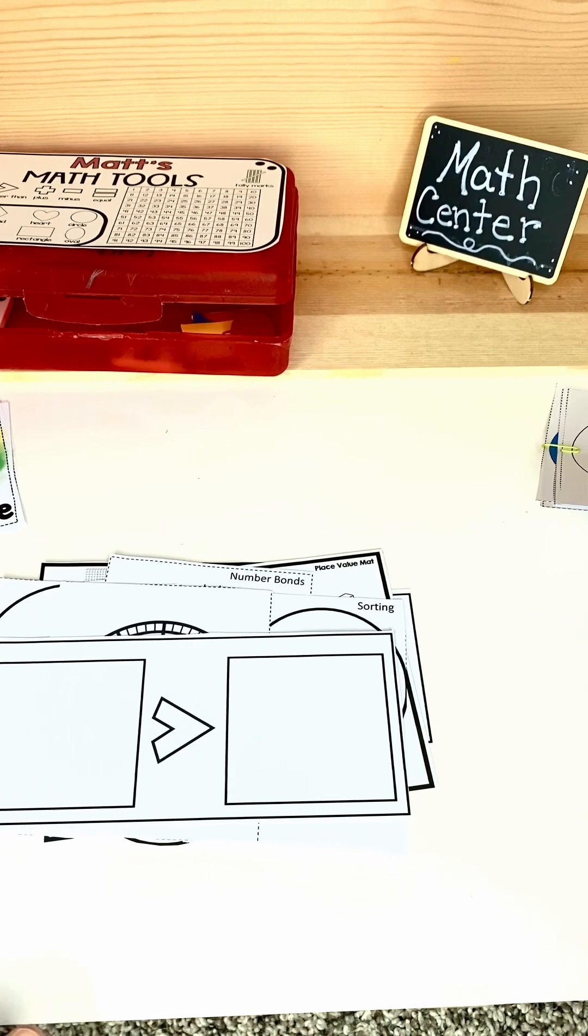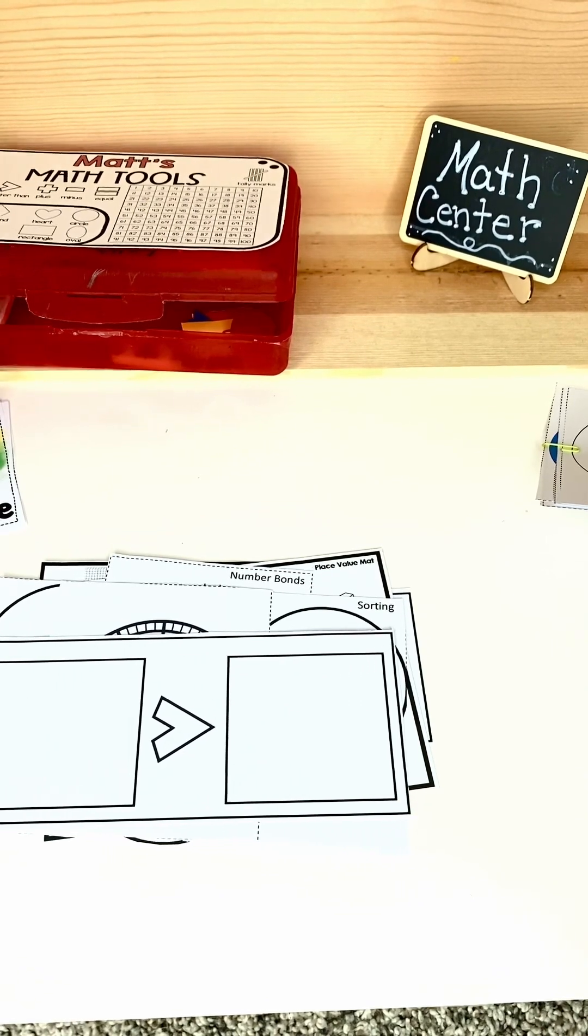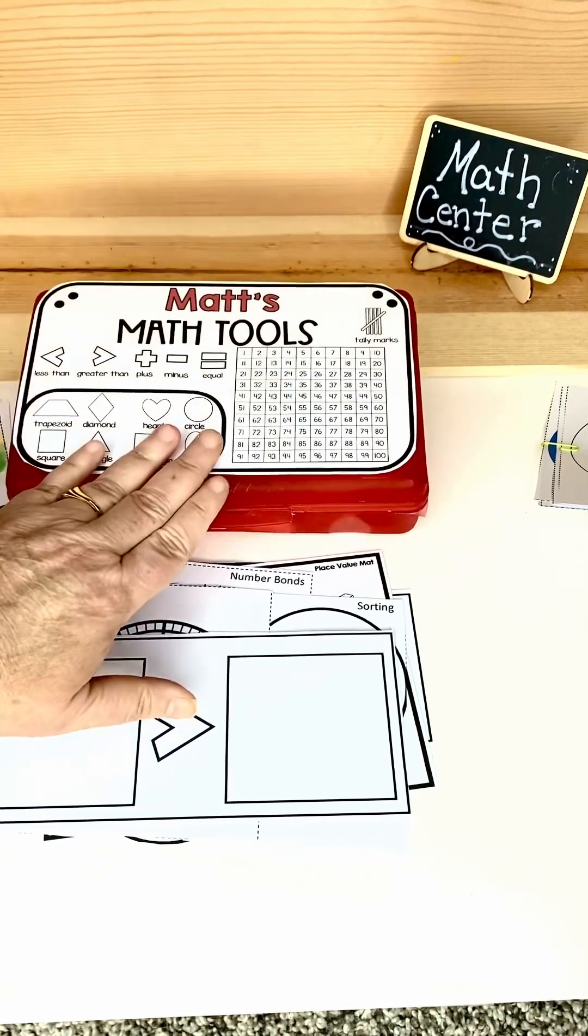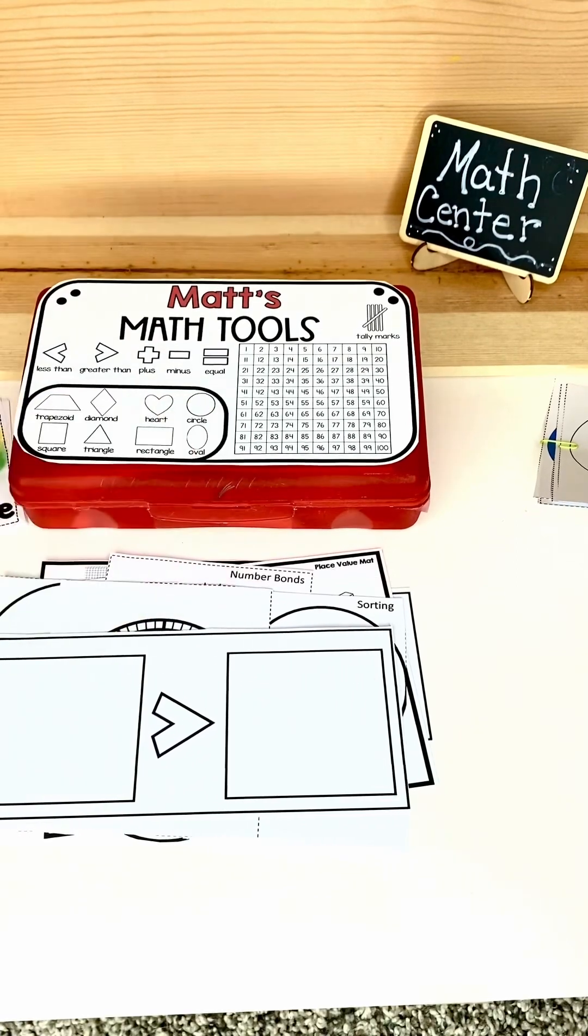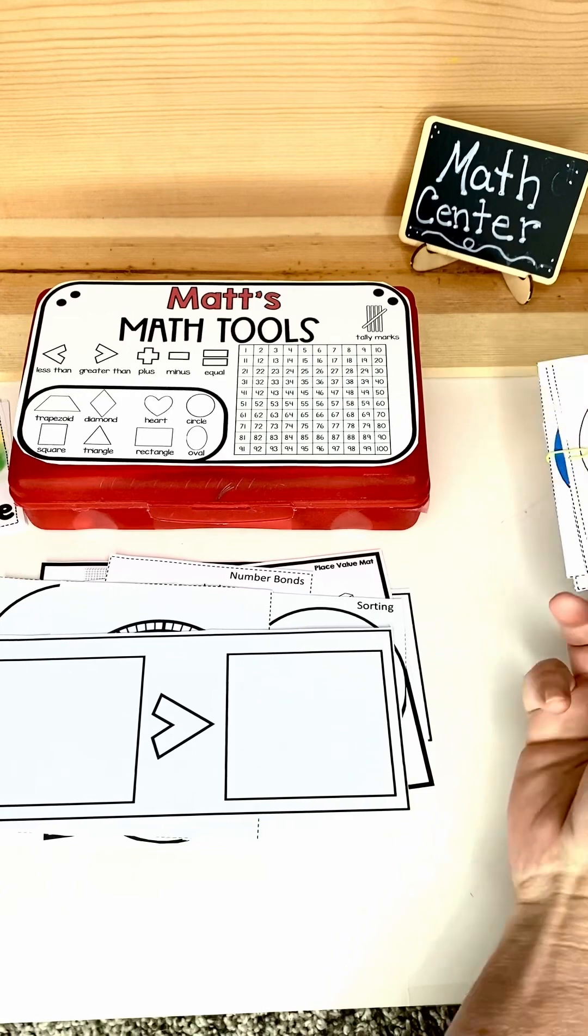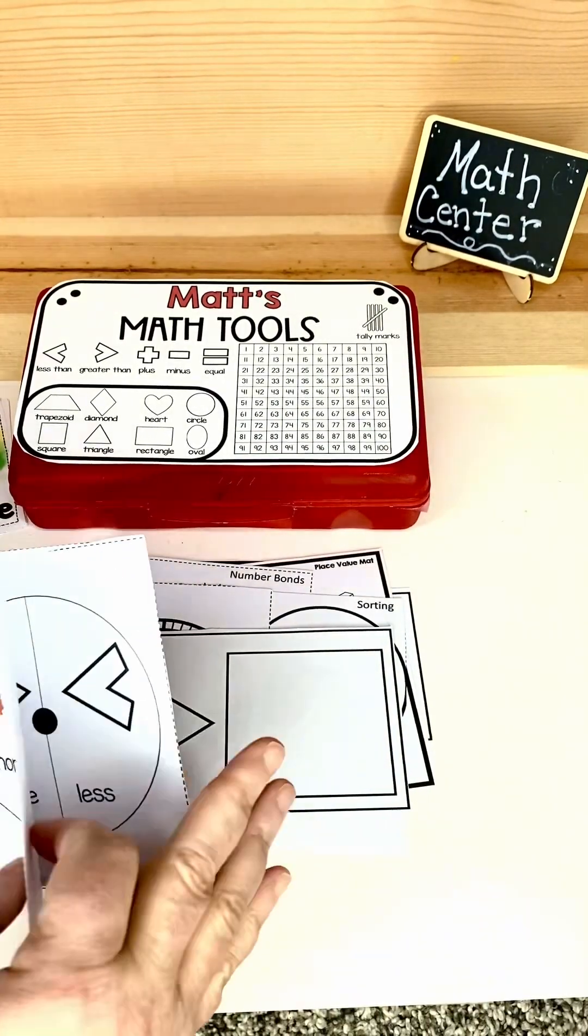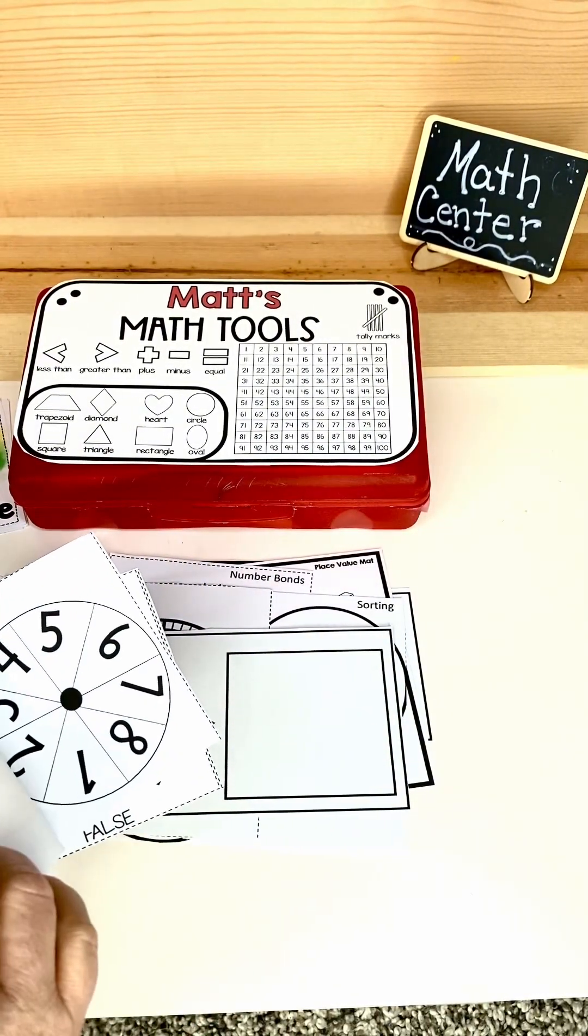And that is it for the math toolbox or tool kit that you can get from my store. The things that are editable are the names. There's also a scoring sheet to help you guys keep data on your students. You can edit that. You can edit all of the spinners. I've got every size in there that you can think of and you can edit those.